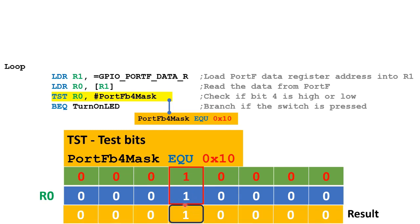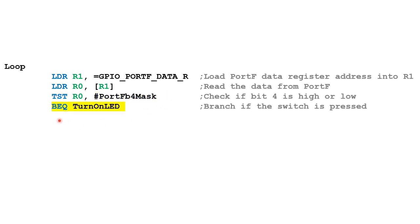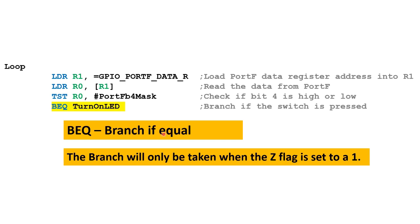If those bits are set to 1, the AND operation produces a non-zero result, and this affects the zero flag — the Z flag will be set to 1. Next, the BEQ instruction branches to the subroutine 'turn_on_led'. BEQ stands for 'branch if equal' — the branch only occurs if the Z flag is set to 1.